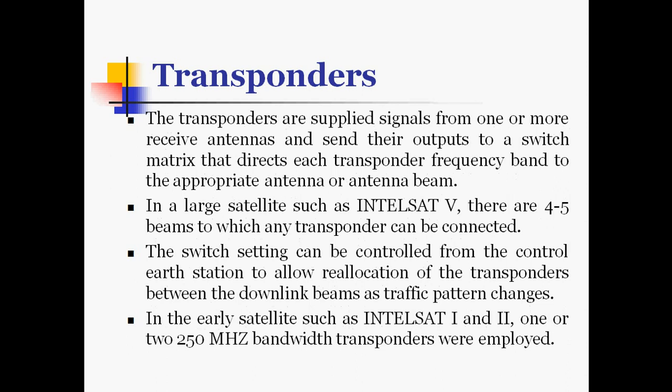The transponders are supplied signals from one or more receiver antennas and send their output to a switch matrix that directs each transponder frequency band to the appropriate antenna or antenna beam. In large satellites such as IntelSAT-V, there are 4 to 5 beams to which any transponder can be connected. The switch settings can be controlled from the control earth station to allow reallocation of transponders between downlink beams as traffic patterns change.